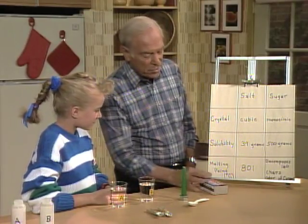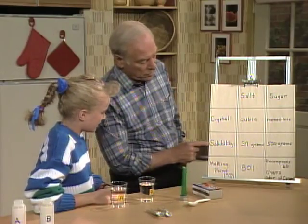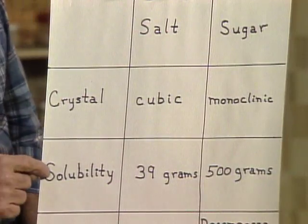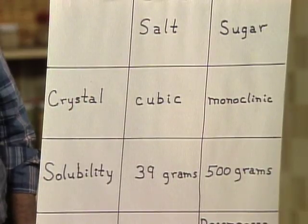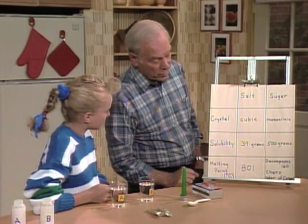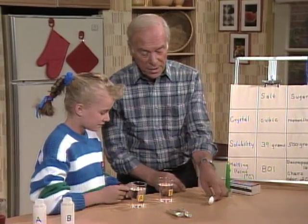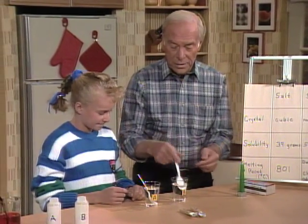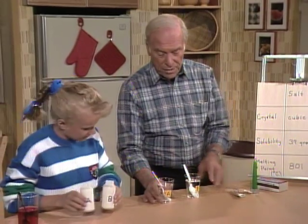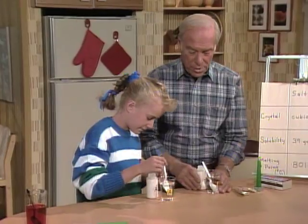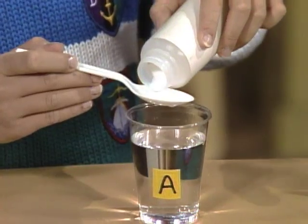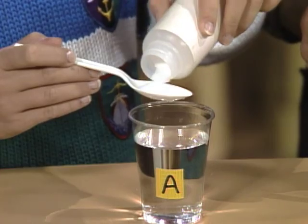So now we have to look at some other properties. You know what solubility is? That's how much will mix into water. Right. Notice salt: 39 grams. And sugar: 500 grams. That's quite a big difference. So we should be able to use those two differences. Here are two spoons and two glasses of water. Bring over A and B. Put in maybe two heaping teaspoons of A, and I'll put two heaping teaspoons of B.